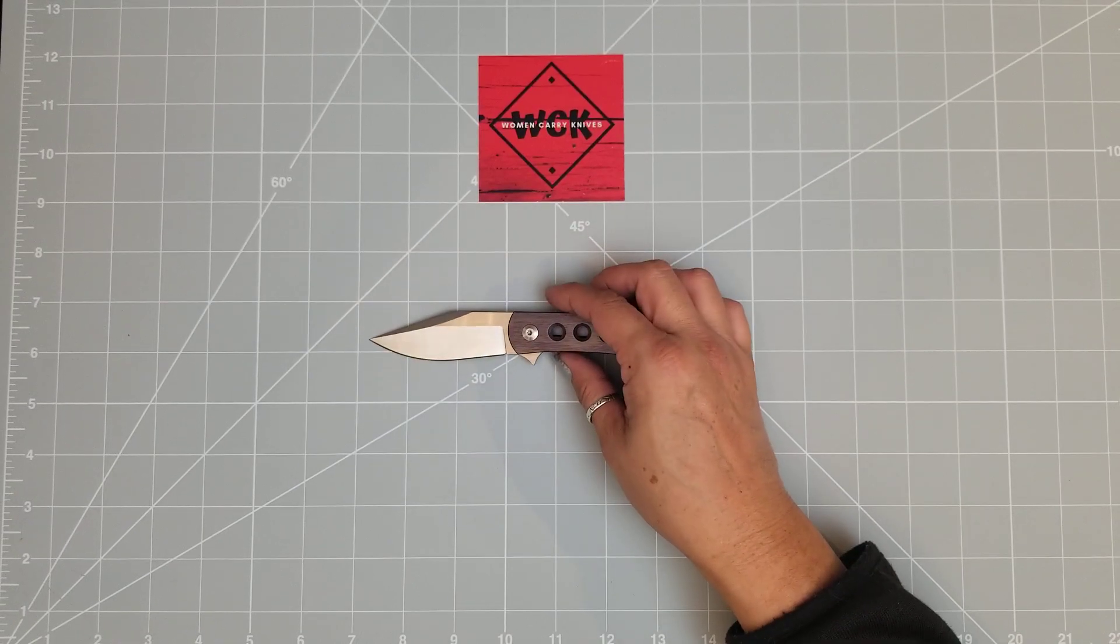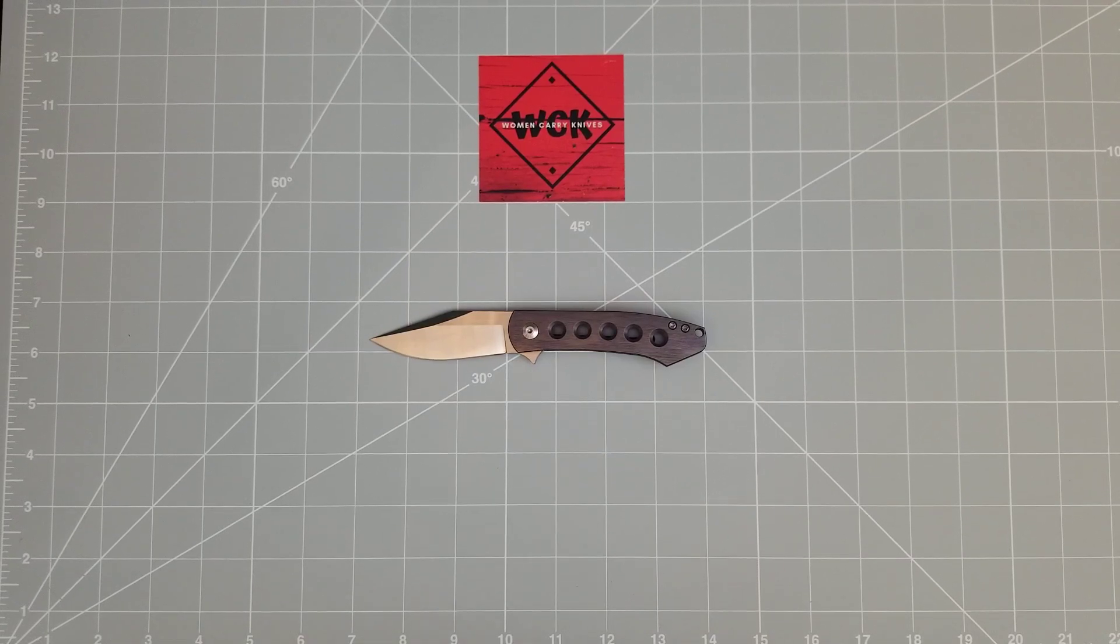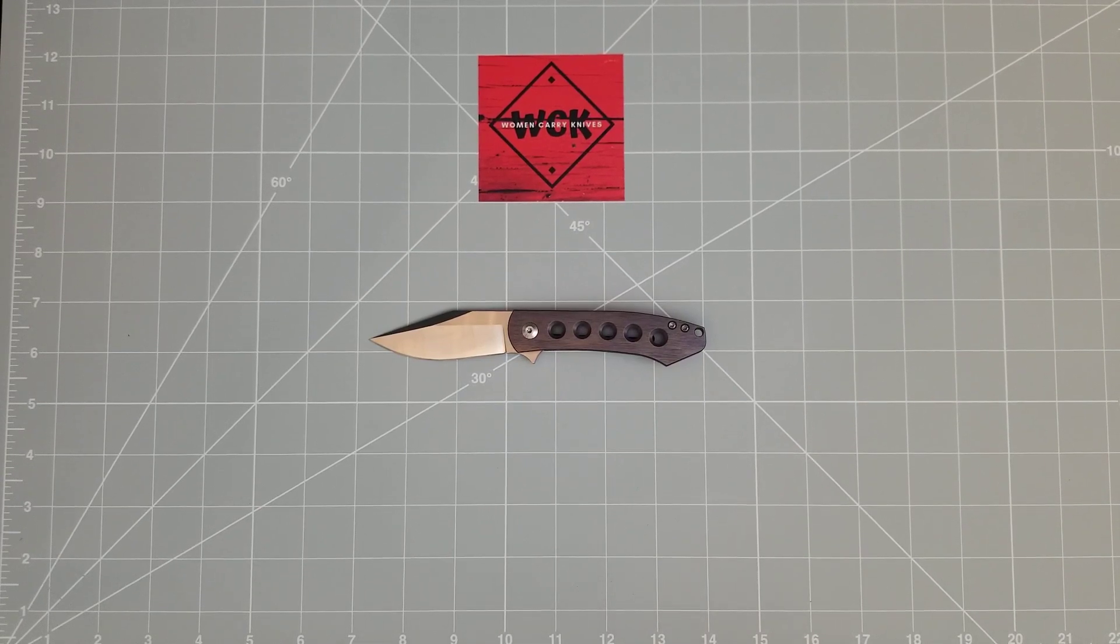So that is the Monterey Bay knives Ray Laconico design Min Pin. Again, get on the mailing list so when these do come out, if you want one, you can get one. Thank you so much for joining me. Don't forget to like and subscribe. If you don't already, I'd love to have you here full time. Go ahead and hit that subscribe button. If you have any comments or questions, go ahead and leave them down in the comment section. Love talking to you guys. I try to answer any of your questions or any of your comments. Love having you here. It's been great. Thank you so much for joining me. Until next time.